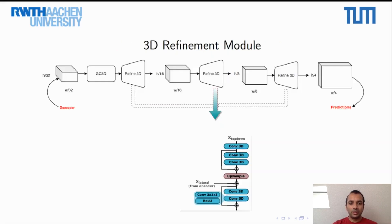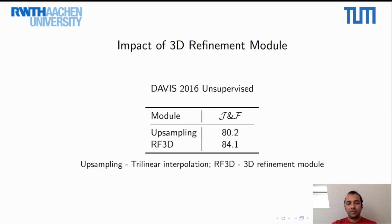Another important module in our decoder is a 3D refinement module, which takes as input a lower-resolution feature map and then upsamples it to a higher resolution. This module consists of a couple of 3D convolutional layers at the beginning, followed by a skip connection, and then a tri-linear upsampling layer. The output of the upsampling layer is then concatenated with the corresponding feature map from the encoder, which again follows a couple of 3D convolutions along with a skip connection. Such a refinement module outperforms a simple upsampling module, as can be seen from the table, where we replace the refinement modules with a simple tri-linear upsampling layer and evaluate on Davis 2016.